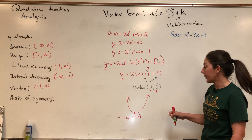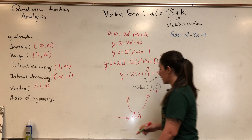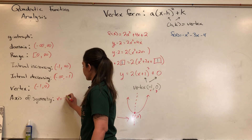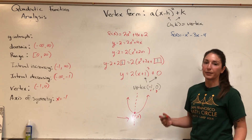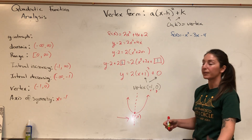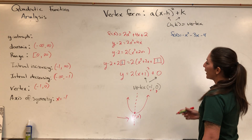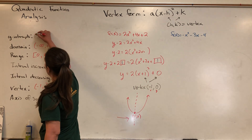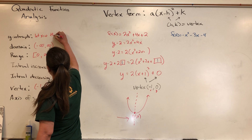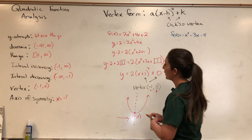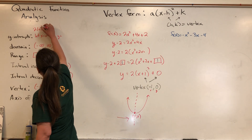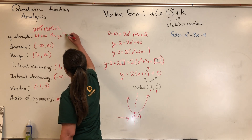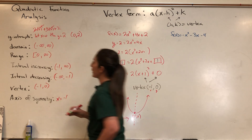For an upward-facing concave parabola, we decrease to the vertex and then increase after it. So we're decreasing from negative infinity to negative 1, and then increasing from negative 1 to infinity. The axis of symmetry goes through the vertex: x equals negative 1. For the y-intercept, let x equal 0: 2 times 0 squared plus 4 times 0 plus 2 gives us 2. So the y-intercept is at 0 comma 2.